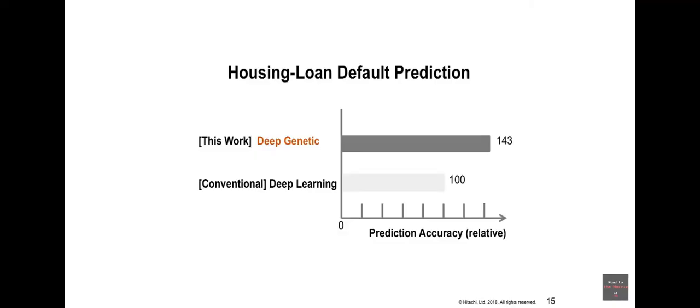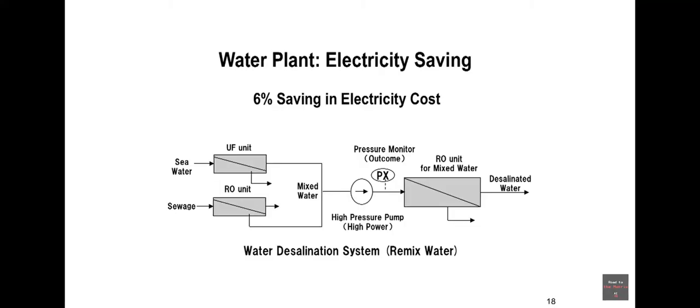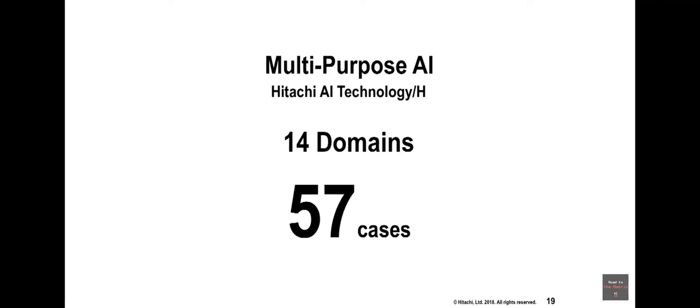That means we give more chances to the people who have not been covered by conventional rules. And this technology also allows us to save electricity in railway operation by 40% or electricity costs of water plants by 6%. Already 57 cases in 40 domains have been utilizing this learning and experiment learning process.